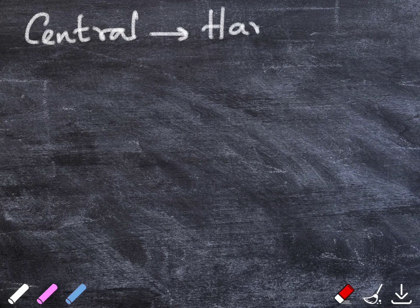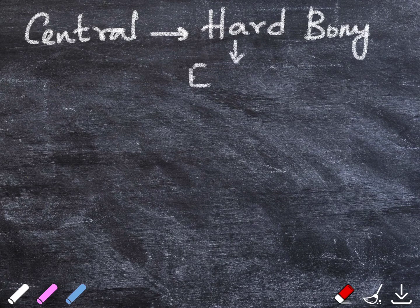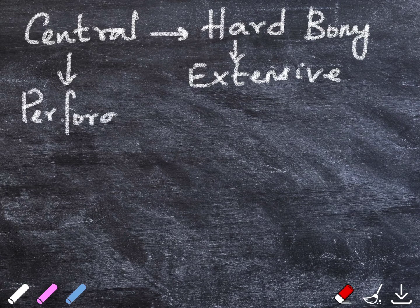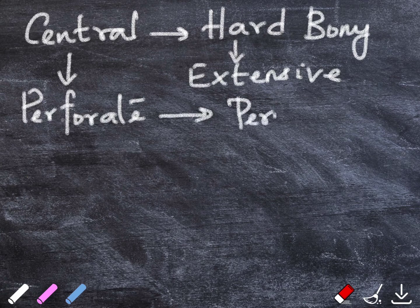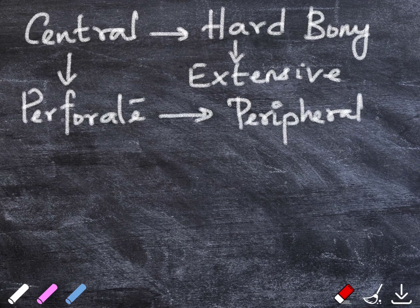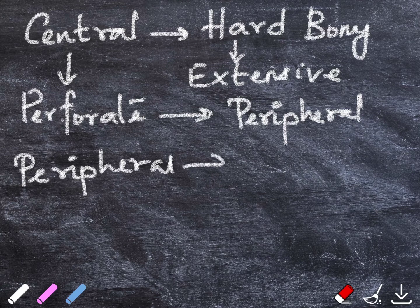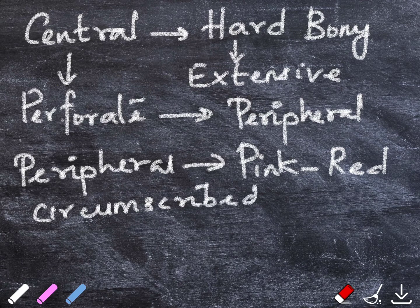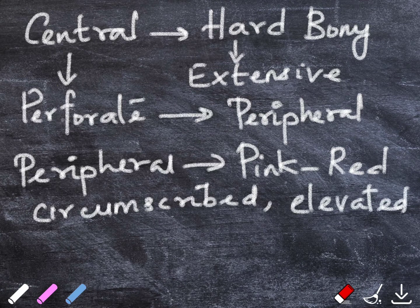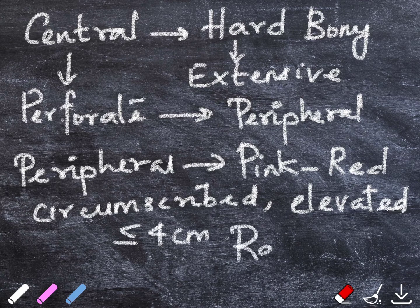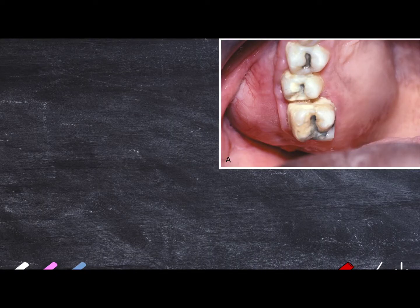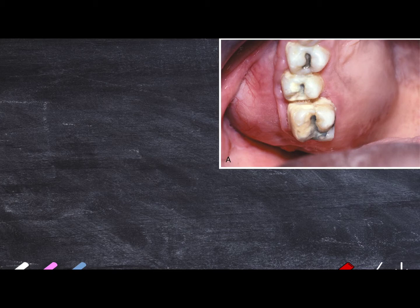Central lesions will reveal a hard bony expansion which can be fairly extensive. In the first picture, you can see a central or an intraosseous lesion which has expanded to a large size resembling a very aggressive lesion.